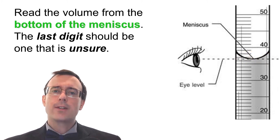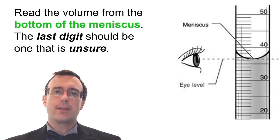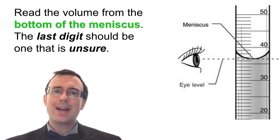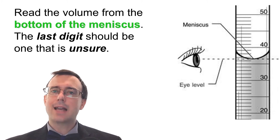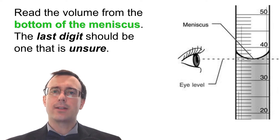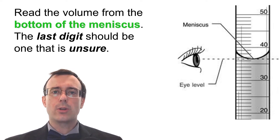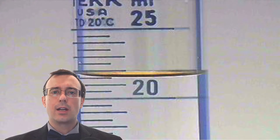Students tend to not write down enough digits. That very last digit of the volume needs to be somehow estimated or guessed — if you know that number exactly, you're probably not writing down enough significant figures. Let's try a couple of examples to show you how this works.